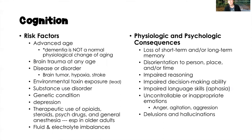Risk factors for cognitive impairment include advanced age — though dementia is not a normal physiologic change of aging — brain tumors, hypoxia, stroke, and exposure to environmental toxins. Excessive lead exposure, especially over a prolonged period, can result in cognitive decline. Genetic conditions, depression, and therapeutic use of opioids, steroids, certain psychiatric drugs, and general anesthesia — especially in older adults — are also risk factors, as are fluid and electrolyte imbalances, particularly dehydration.